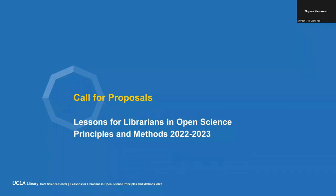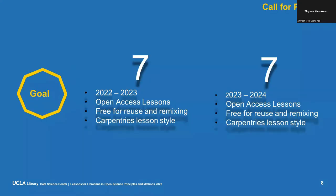We are here to call for proposals for Lessons for Libraries in Open Science Principles and Methods. This project will last from 2022 to 2024. Our goal for the 2022–2023 academic year is to have seven lessons developed, and another seven for 2023–2024. These lessons will be open access, free for reuse and remixing. We prefer developing lessons following the Carpentries lesson dial — if you've never heard of it, no worries, we'll show you what it looks like in the following slides.